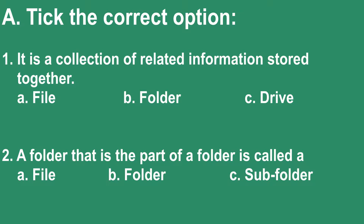Let's begin with tick the correct option. First question: it is a collection of related information stored together. Option A — file, Option B — folder, Option C — drive. The right option is Option A: file.